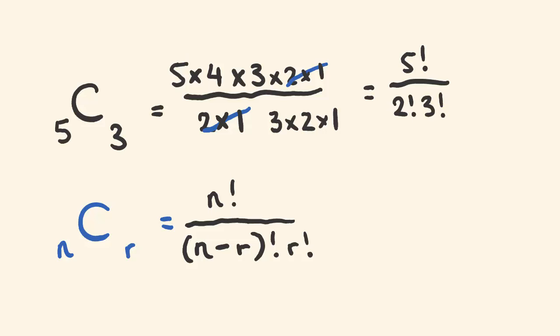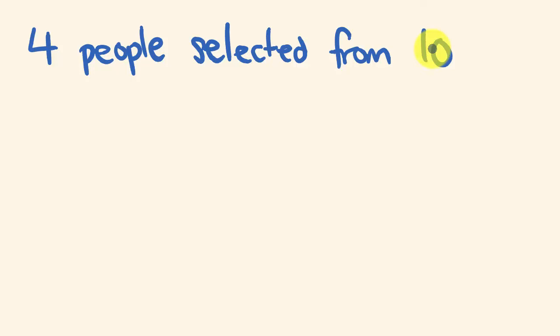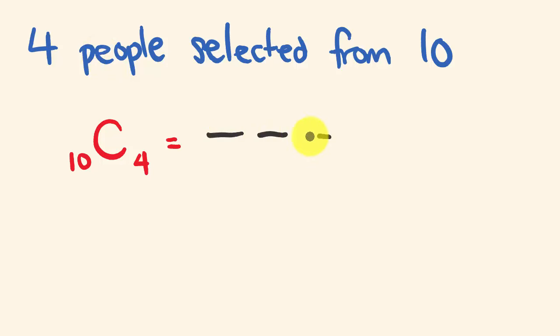Let's go through another example. Say we had a committee and we were going to select four people from a bigger group of ten. How many different ways could we do this? We don't care about order, so this is a combinations problem. We write C(10, 4). We set up four positions: the first has 10 people to choose from, then 9, then 8, then 7.